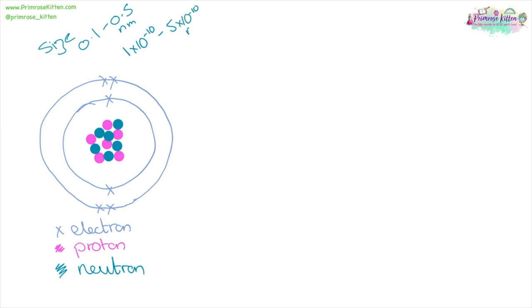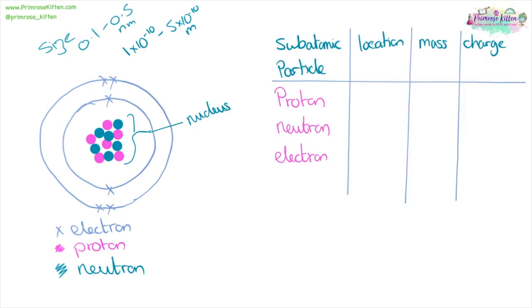Now inside our atom we have protons and neutrons. And in the shells on the outside we have electrons. This bit in the middle here, this is called a nucleus. Protons and neutrons are located in the nucleus. Whereas electrons are in the outer shells.